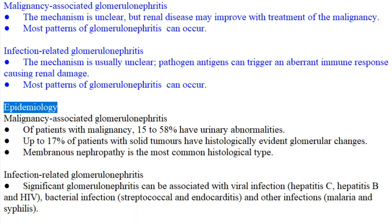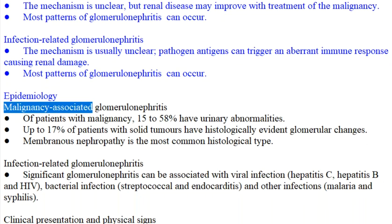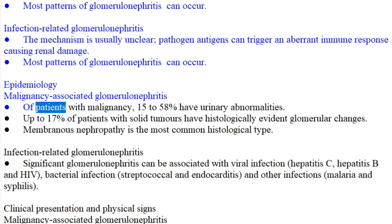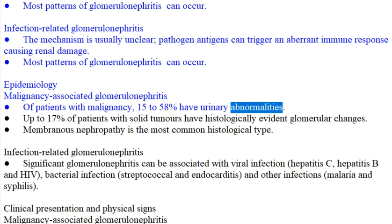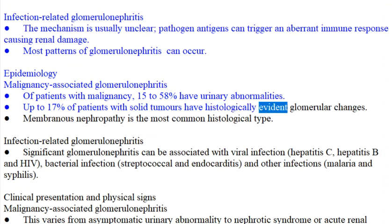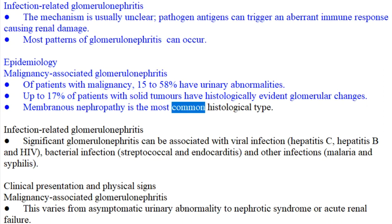Epidemiology. Malignancy-associated glomerulonephritis: of patients with malignancy, 15–58% have urinary abnormalities. Up to 17% of patients with solid tumors have histologically evident glomerular changes. Membranous nephropathy is the most common histological type.